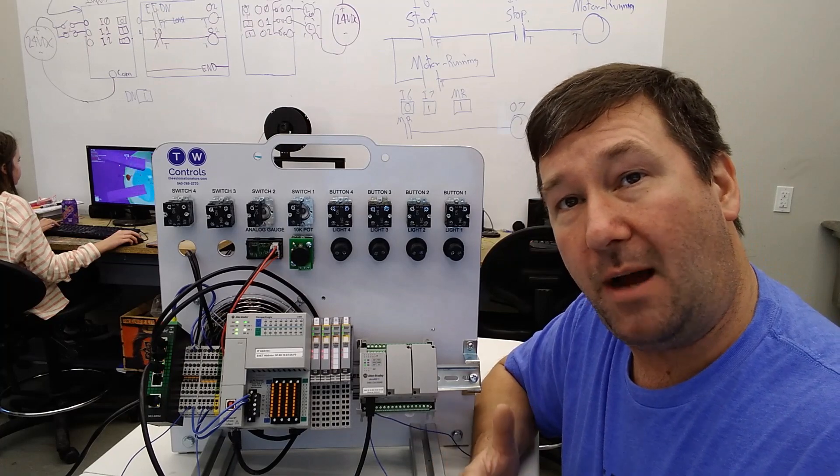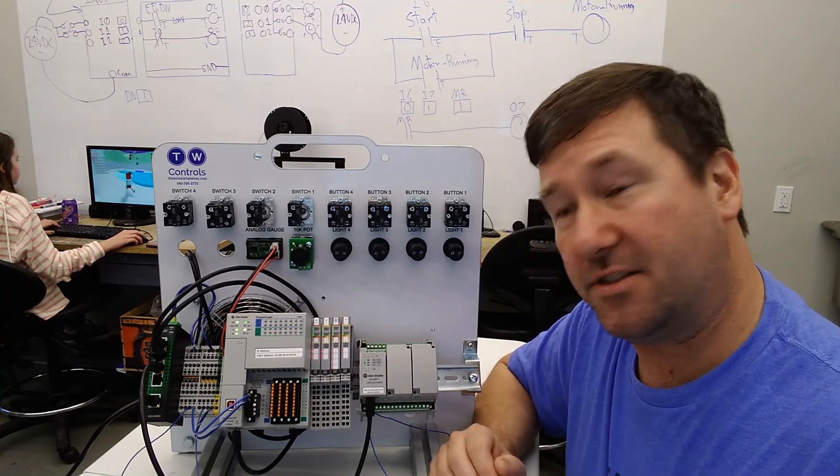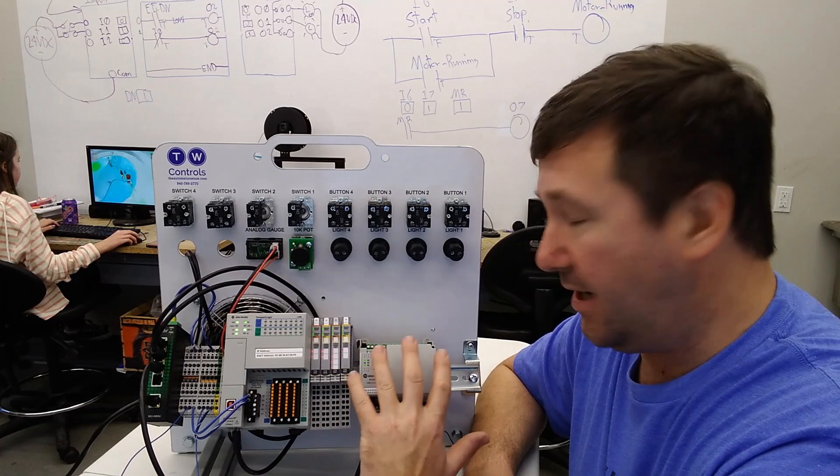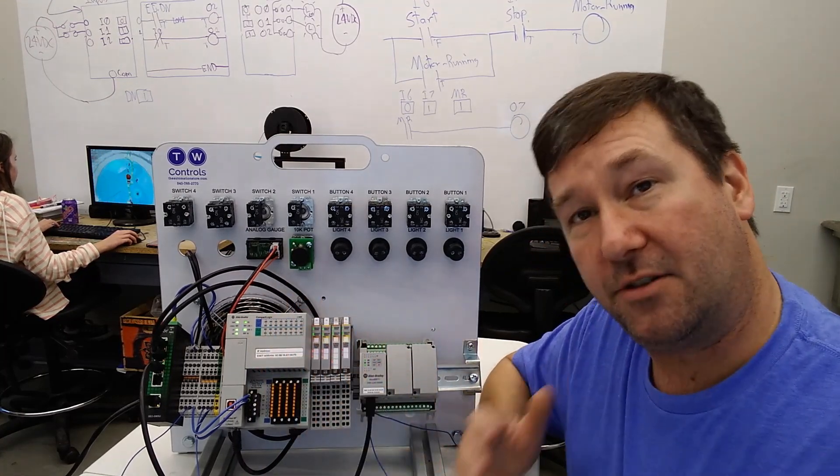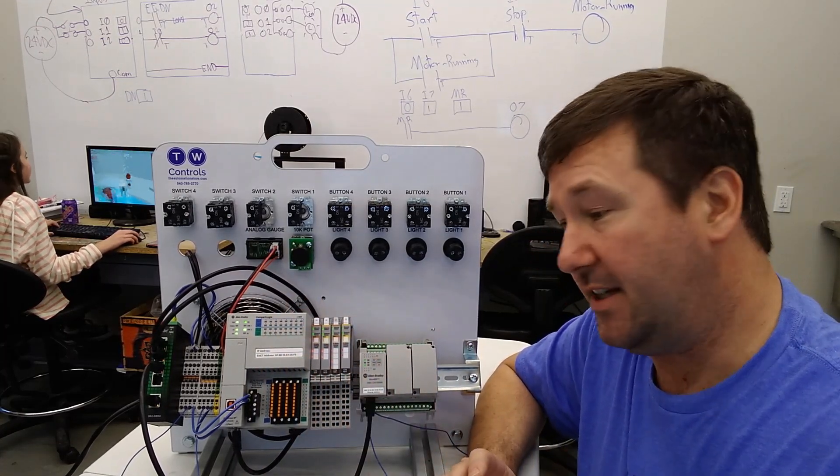So there is a quick primer on how you can use messaging instructions to read data from a micro 800 PLC into a control logics PLC or compact logics PLC.